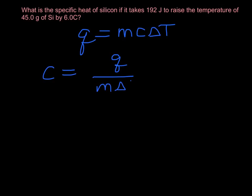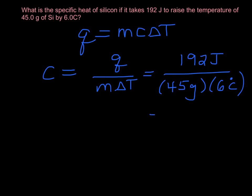The q is given to us, 192 joules. The mass is 45 grams, and the change in temperature is six degrees Celsius. So if you do that out, you get a specific heat capacity of 0.71 joules per gram degree Celsius.